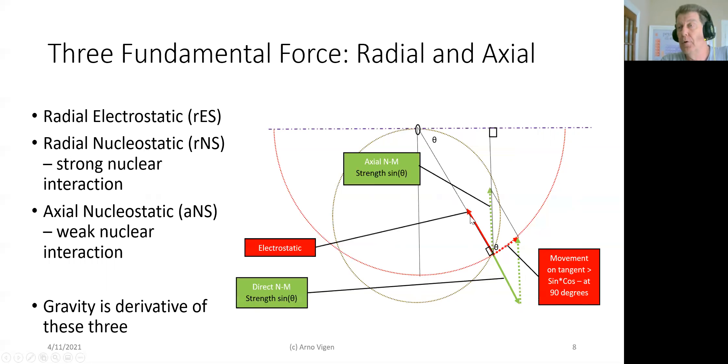There's the radial electrostatic, that's the like kinds repel, opposites attract that we find and know about. The other one is this extra one over r radial nucleostatic. So in this graph, we have from the electron to the proton opposite. The electrostatic attracts, but the strong nuclear force is always opposite in direction.